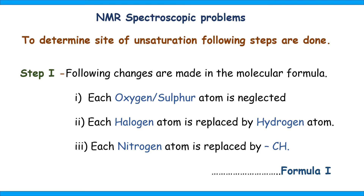To determine site of unsaturation, the following steps are done. In step 1, the molecular formula of the compound is given and the following changes are made: if the molecular formula contains oxygen or sulfur atom, it is neglected. If a halogen atom is present, it is replaced by a hydrogen atom. If the molecular formula contains a nitrogen atom, each nitrogen atom is replaced by CH. After these modifications, the resulting formula is known as formula 1.